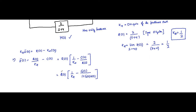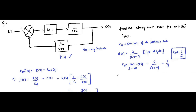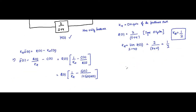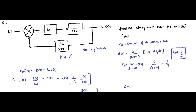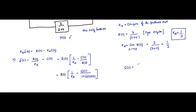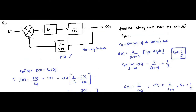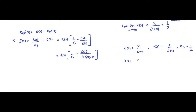Now all we have to do is substitute the values. From the block diagram, the forward path gain G(s) is equal to K/(s+2). When there are two blocks in cascade, the gains are multiplied. With K=4, G(s) = 4/(s+2). H(s) = 2/(s+4), KH = 1/2. The input is a unit step, so r(t) = u(t) and R(s) = 1/s.